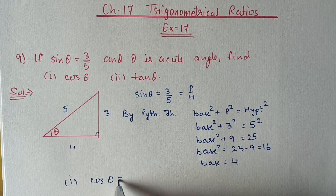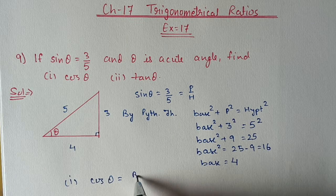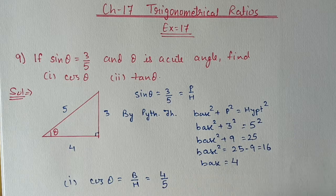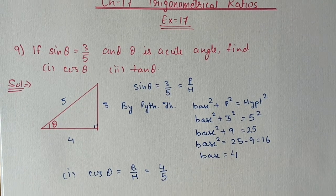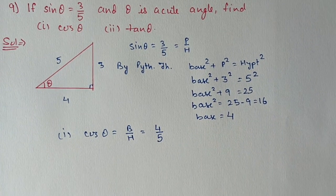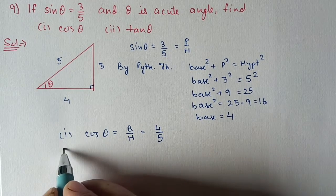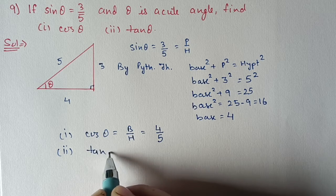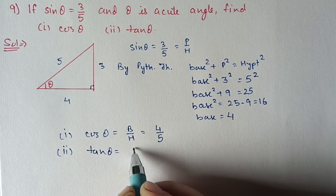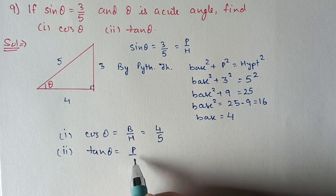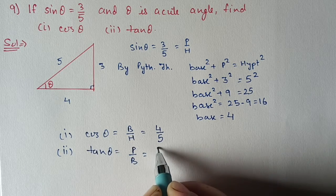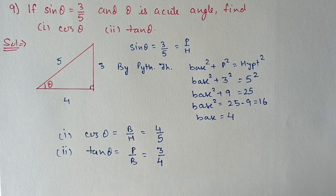Now for the first part, we find cos θ: cos θ is base upon hypotenuse, so 4 upon 5. For the second part, we find tan θ: tan θ is perpendicular by base, perpendicular is 3 and base is 4, so tan θ equals 3 by 4.